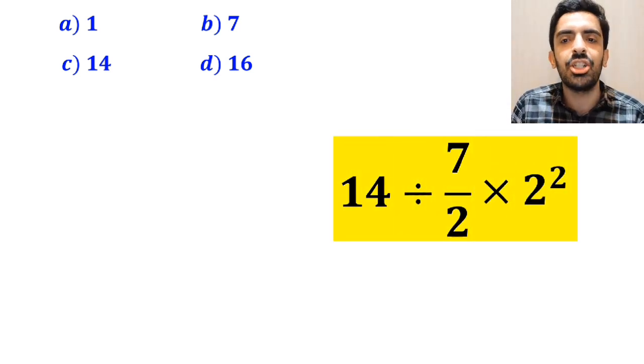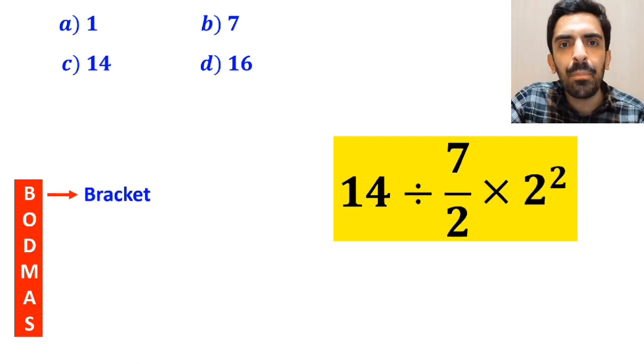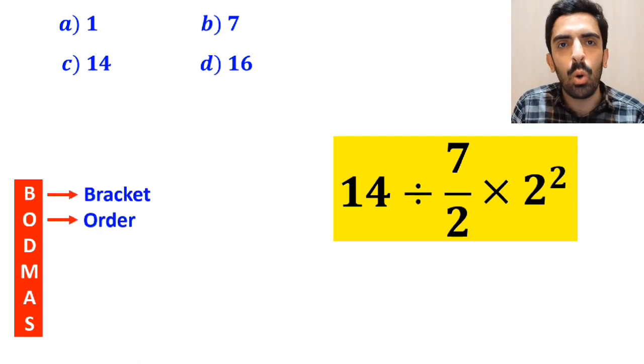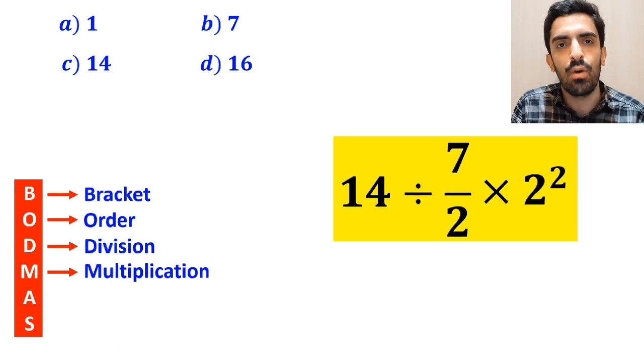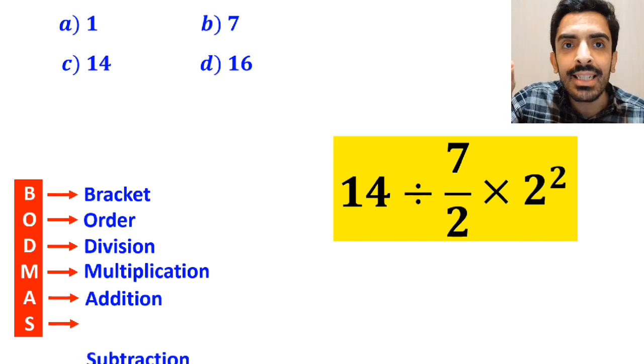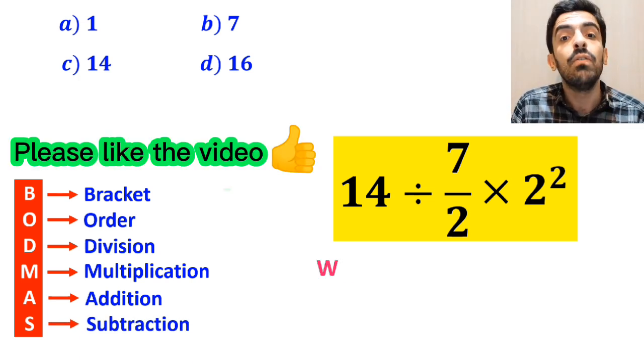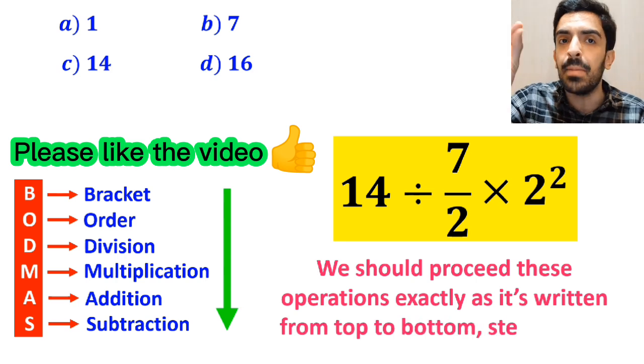To solve this question, we must follow the BODMAS rule. In this rule, B stands for bracket, O stands for order, D stands for division, M stands for multiplication, A stands for addition, and S stands for subtraction. We should proceed these operations exactly as it's written from top to bottom step by step.